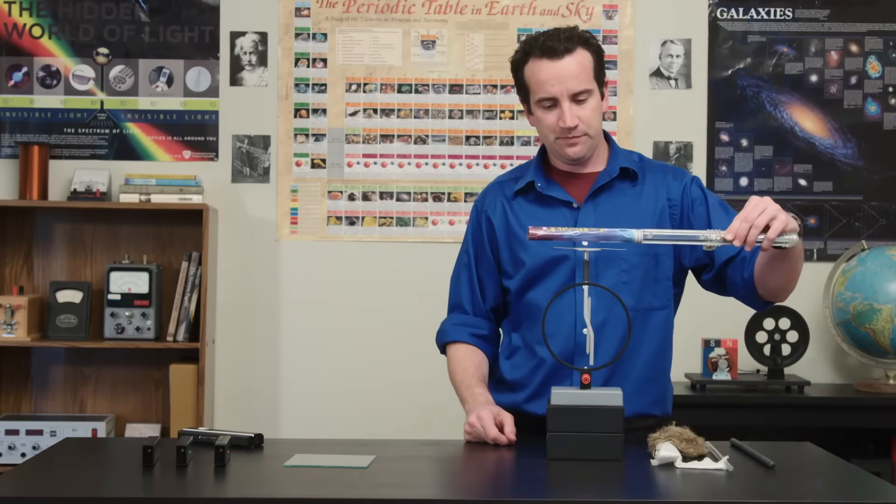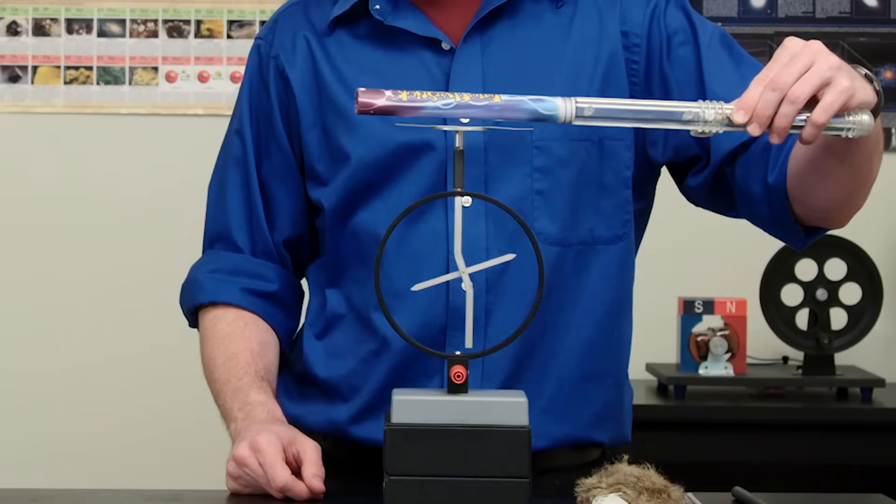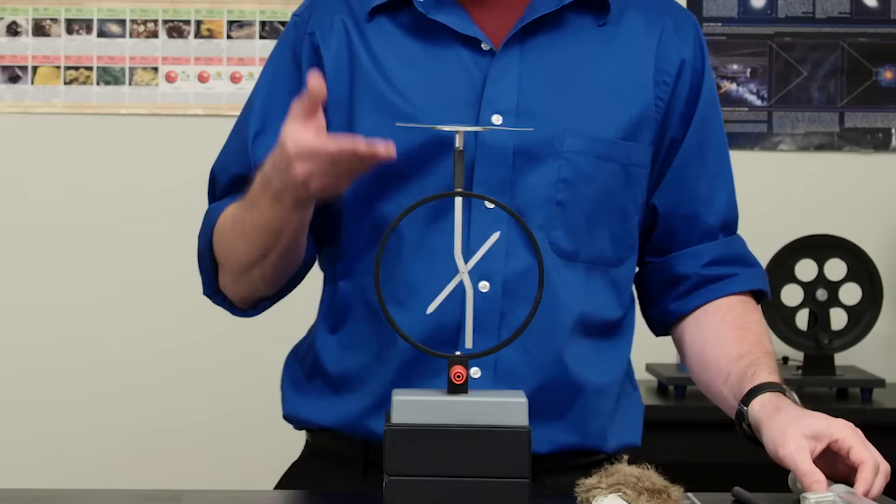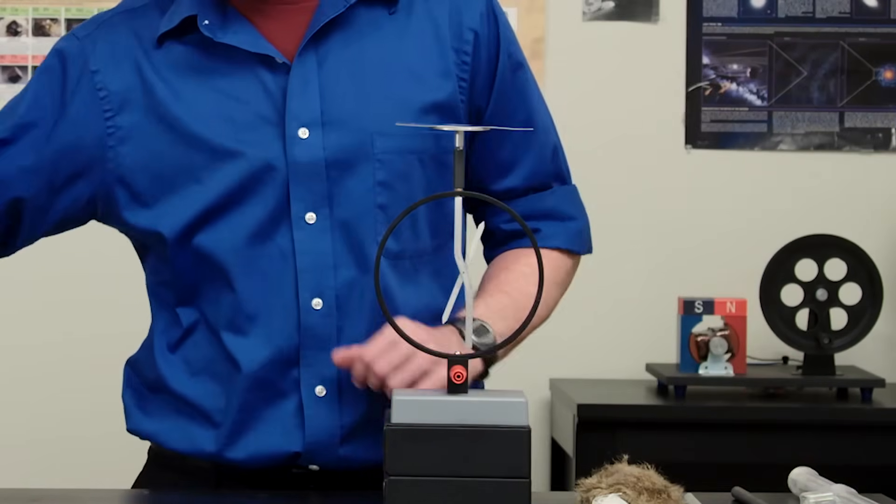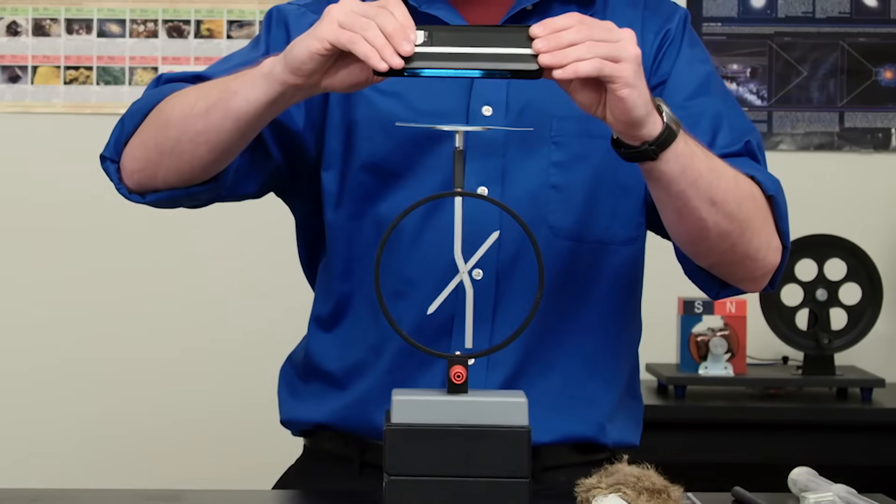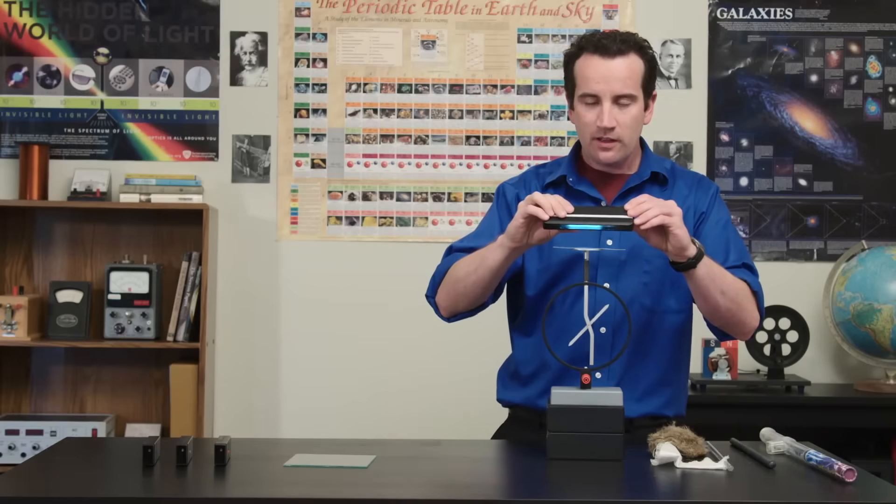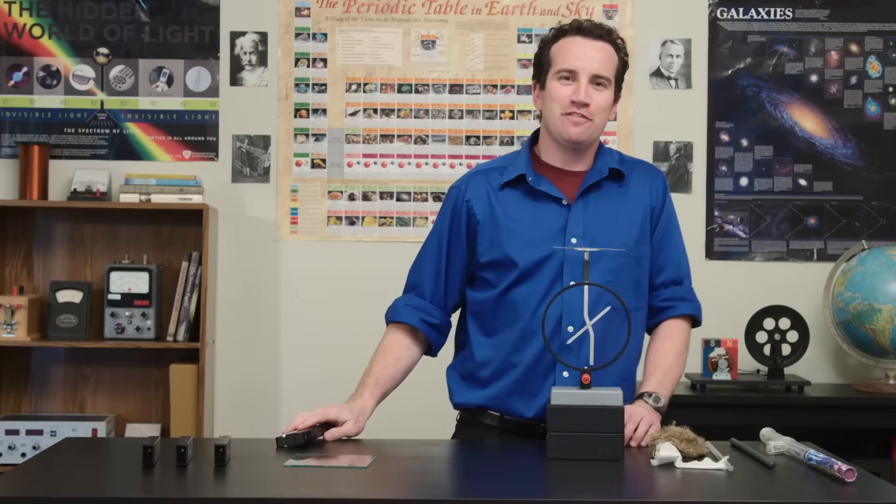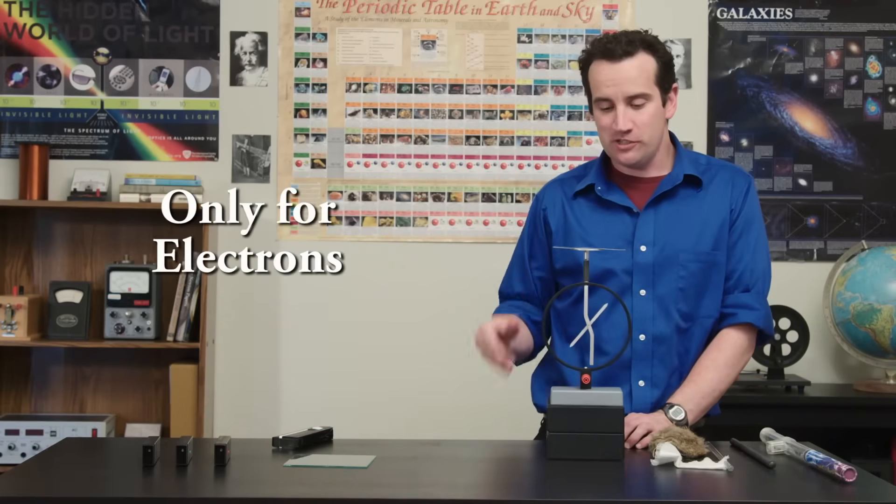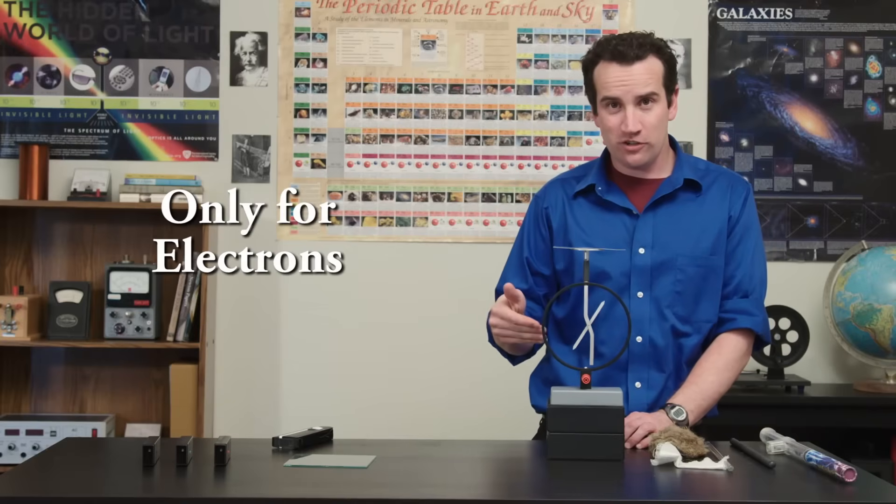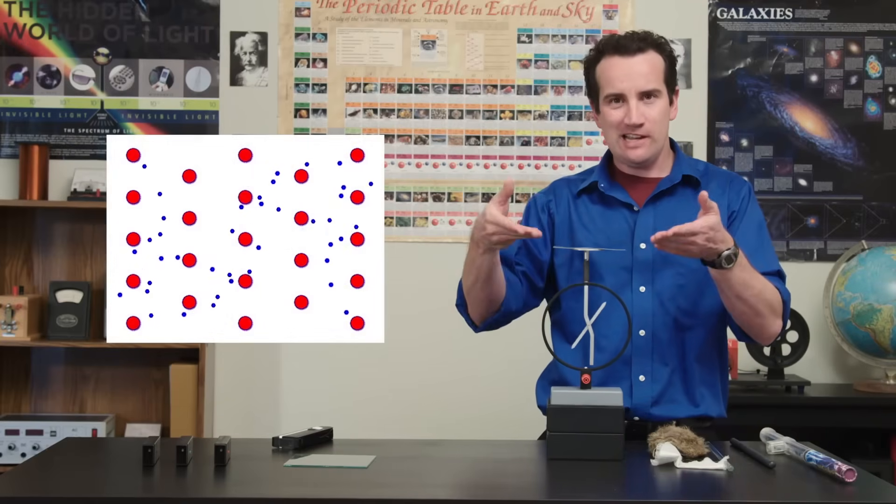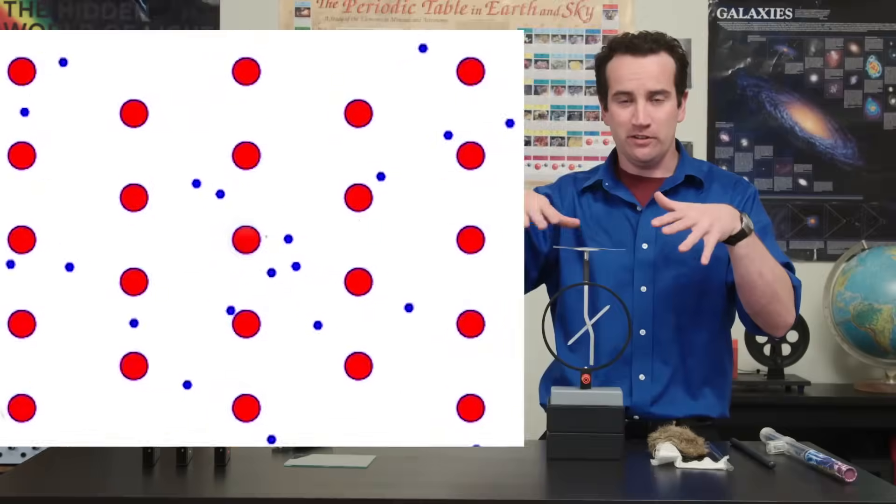We now repeat the experiment with positive charge in place. It doesn't work. The photoelectric effect is only for electrons. It will not work on positive charges. The electrons are light and mobile at the surface of the metal, but the positive charges are deep in the nucleus and it takes a lot of energy to get them out.